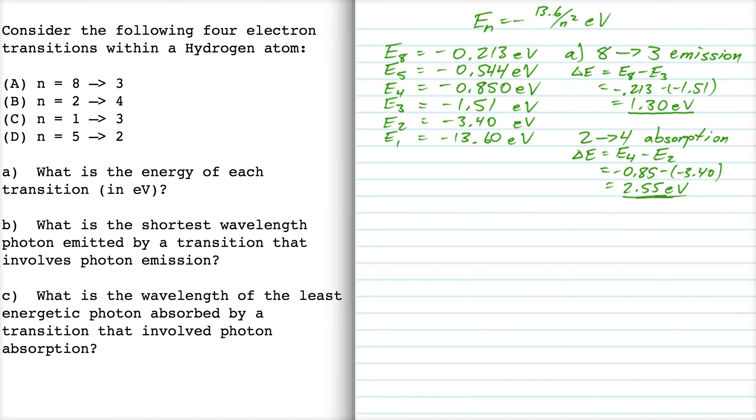The next transition is from 1 to 3. That's also absorption. So delta E is going to be E3 minus E1, and that's going to be minus 1.51 minus negative 13.6, so that's 12.1 eV.